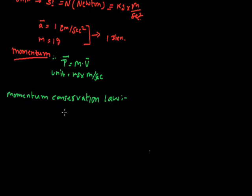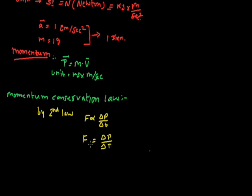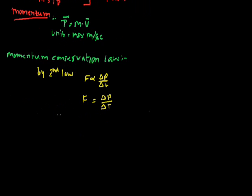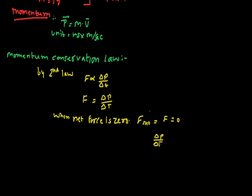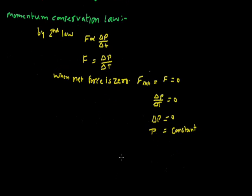Now we define the law of conservation of momentum. According to Newton's second law, F is proportional to delta p over delta t, or F equals delta p over delta t. When the net force is zero — that is, F equals zero — then delta p over delta t equals zero, which means delta p is zero, meaning the momentum of the system is constant.